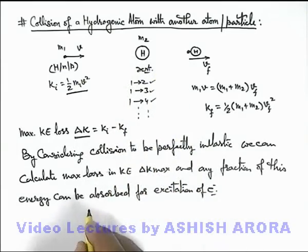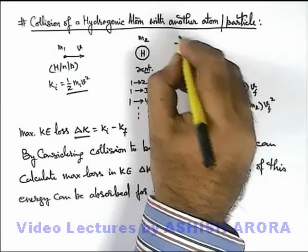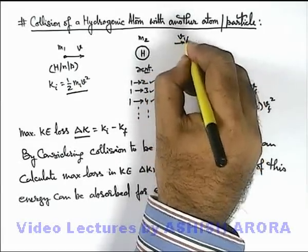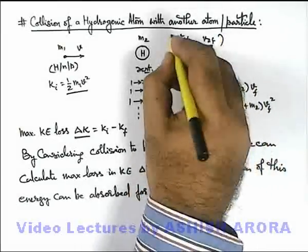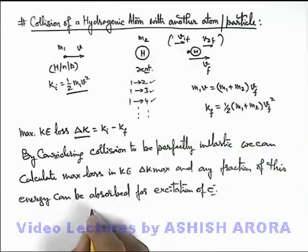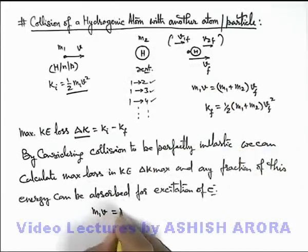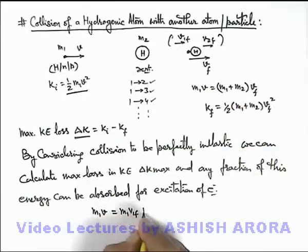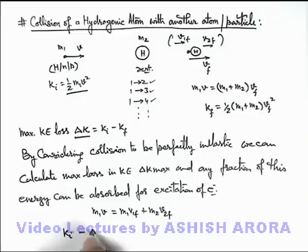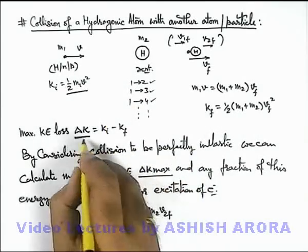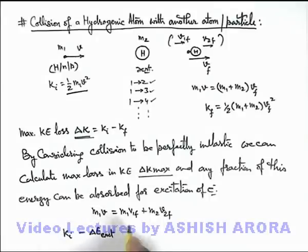Like we can use, if after collision the two are moving with different speeds, say v1 final and v2 final for the two particles, then we can use momentum conservation: m1 v is equal to m1 v1 final plus m2 v2 final. And we can write initial kinetic energy minus delta E for excitation, which is absorbed by the hydrogen atom, which must be less than this delta K max which we have calculated earlier.